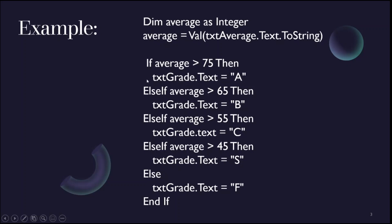Here, we will check the value of average. If it's greater than 75, then we will put a result of A in our text grade. Else if average is greater than 65, then text grade.text equals B. Else if average is greater than 55, then text grade.text equals C. Else if average is greater than 45, then text grade.text equals F. So if we have an average that is not a number, it will automatically go to the else part, which is F.